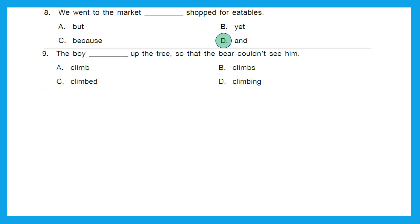Question 9: 'The boy dashed up the tree so that the bear couldn't see him.' Options are: climb, climbs, climbed, or climbing. We are talking about a past incident, so we need the verb in past tense — the second form of the verb. The right answer is option C, climbed. The boy climbed up the tree so that the bear couldn't see him.